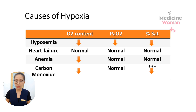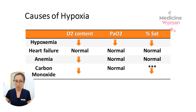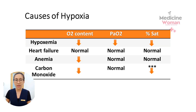In anemia, the PaO2 and the oxygen saturation are normal. In carbon monoxide poisoning, the oxygen content is reduced, the PaO2 is normal, and the percent saturation is reduced because carbon monoxide is blocking the binding sites for oxygen. Note the asterisk here as a reminder that the pulse oximeter detector may report a normal O2 saturation in the setting of carbon monoxide poisoning.